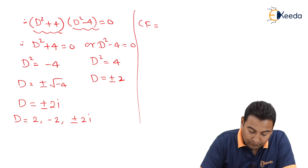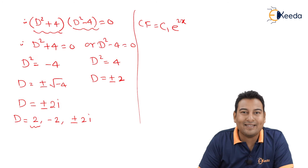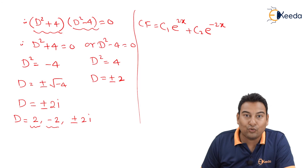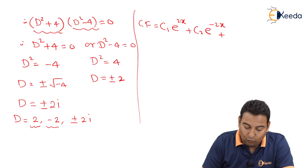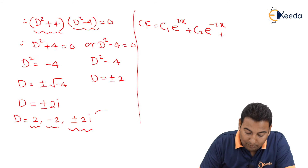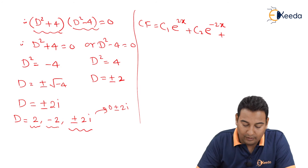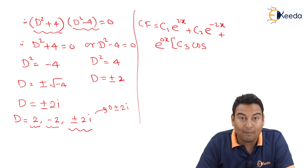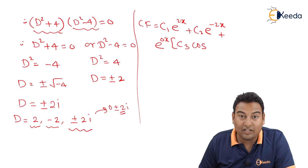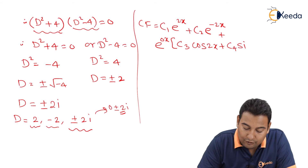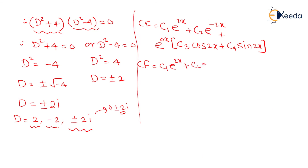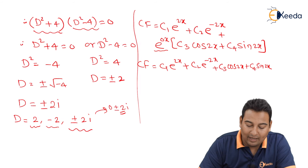Let's write down the complementary function. For real root +2: c₁e^(2x). For real root minus 2: c₂e^(−2x). For complex roots ±2i, treating as 0 ± 2i — real part is 0, imaginary part is 2 — so e^(0·x)(c₃cos(2x) + c₄sin(2x)). Since e^0 = 1, the CF is c₁e^(2x) + c₂e^(−2x) + c₃cos(2x) + c₄sin(2x).